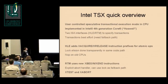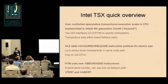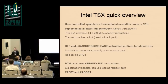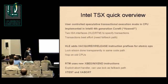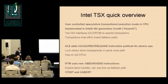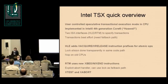HLE — hardware lock elision — adds two new instruction prefixes, XACQUIRE and XRELEASE, which used to be no-ops on older CPUs. So if you run them on old CPUs they don't do anything. You can add these XACQUIRE and XRELEASE prefixes to existing atomics and they will transparently try to elide the lock defined by the atomic — XACQUIRE on the lock, XRELEASE on the unlock. If it doesn't work, it just falls back to taking the lock. This is a legacy-compatible interface.